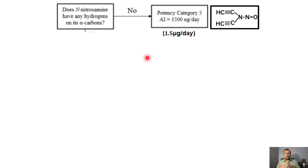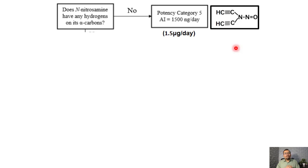If there is no hydrogen present on the alpha carbon — as shown in the example where the carbon adjacent to the nitrogen has no hydrogen — then the compound falls under potency category 5. The limit for category 5 is 1500 nanograms per day (1.5 micrograms per day). This figure comes from the TTC (Threshold of Toxicological Concern) defined in ICH M7 R1 guideline. If you want to apply this TTC approach, the limit is 1.5 micrograms per day — a highly conservative approach.